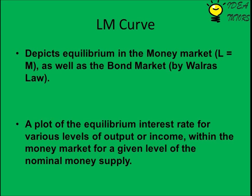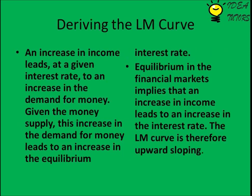To understand how the LM curve is derived: an increase in income leads to an increase in the demand for money at a given interest rate. Given the money supply, this increase in demand for money leads to an increase in the equilibrium interest rate. Equilibrium in financial markets implies that an increase in income leads to an increase in the interest rate. The LM curve is therefore upward sloping.